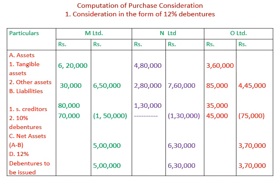For M Limited: tangible assets 6,20,000; other assets 30,000; total assets 6,50,000. For N Limited: tangible assets 4,80,000; other assets 2,80,000; total 7,60,000. For O Limited: total assets are 4,45,000. Liabilities include sundry creditors. Sundry creditors of M Limited: 80,000; 10% debentures: 70,000; total liabilities: 1,50,000.